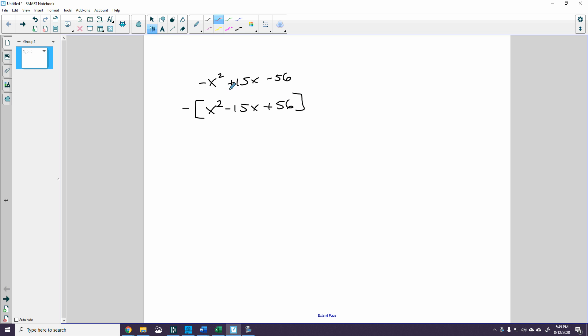So now it is this that I'm factoring, and when I'm all done, I'll just stick the negative sign back in the front. So my a times my c is 56, and I have to find factors of 56 that add up to negative 15.